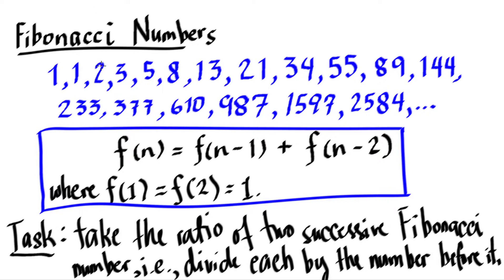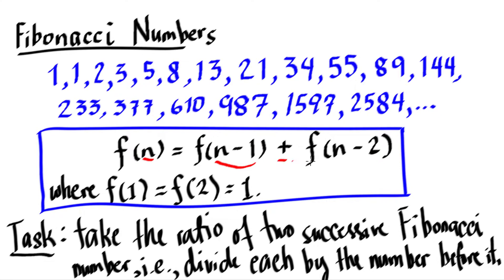Remember that we defined a Fibonacci sequence by this recursive formula, where F of n — where n is the nth number — is equal to the number before it plus the number even before it. So in essence, to have this nth Fibonacci number, we need to get its previous number plus the number even before that, wherein the first and the second numbers are both 1.